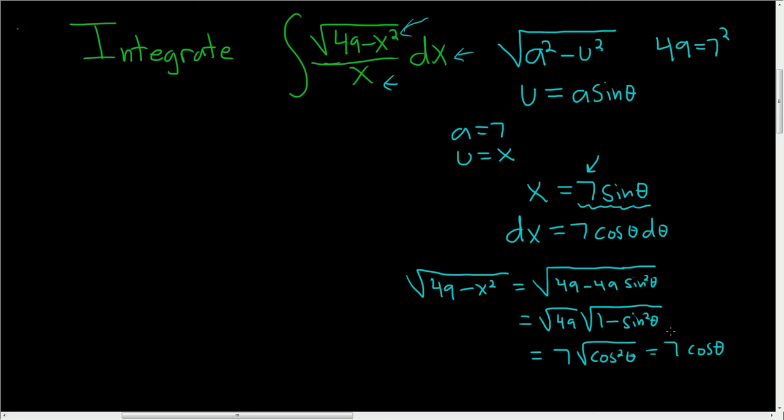And now we're at a point where we're ready to actually make our substitution. So we have the integral. The numerator we said was 7 cosine theta. And then we also have dx. We said that was also 7 cosine theta. Coincidence. So 7 cosine theta. And then we have the d theta. And in the denominator we have x. We said x was 7 sine theta. So this is 7 sine theta.